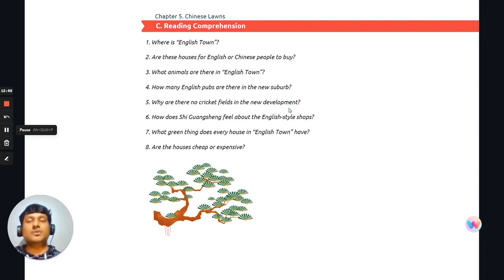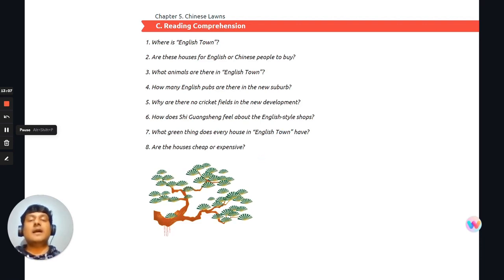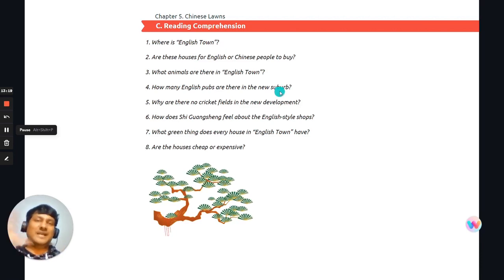Number seven, what green thing does every house in English town have? And they have long gardens with ponds and tall hedges. Number eight, are the houses expensive or cheap? And the answer is they are expensive. Okay. So check your answers. And with that, we've reached the end of chapter five. Great chapter with you guys. And I'm looking forward to seeing you in the next chapter. So bye for now and see you there. Bye-bye.